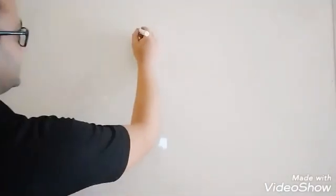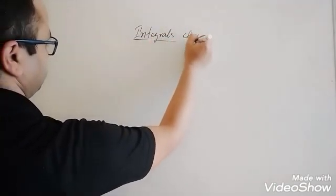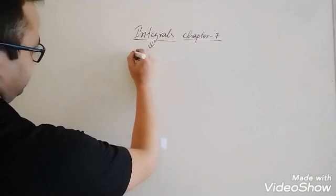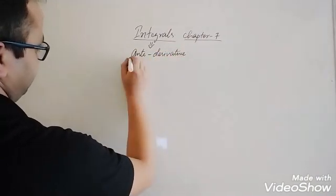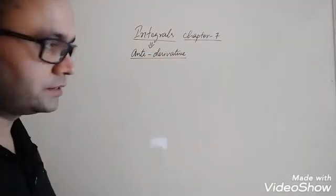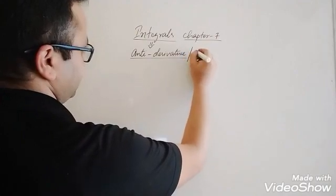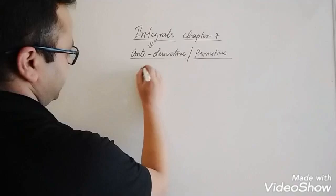Hello everyone. Today we are going to learn about integrals — Chapter Number 7, Class 12. So what do you mean by integral? It is the anti-derivative, which means it is the reverse process of differentiation. The integral is also known as the primitive. Now, integrals are of two types.